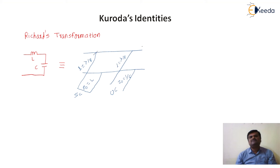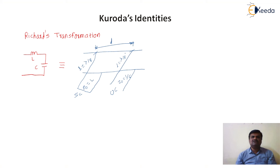But at the same time, the distance or spacing between the two stubs plays a very important role at the time of implementation of the filter. This spacing directly affects the performance of the filter. This problem can be overcome by using Kuroda's identities. What Kuroda has done is he inserted a separate transmission line segment between the two stubs, so that they are physically separated from each other. Even though adding the extra transmission line segment between the two stubs, it does not affect the performance of the filter. So this is Kuroda's identities.